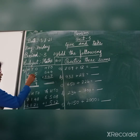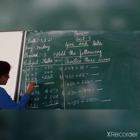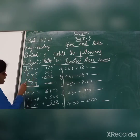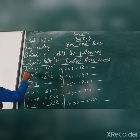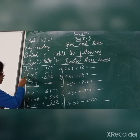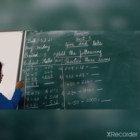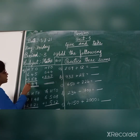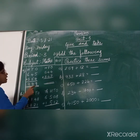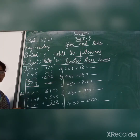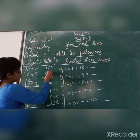Then the tens place we have to keep. 4 plus 5 is again 9. Then the ones place: what is the number from here? 6 and 3 — 6 plus 3, what is the number? 9. So 999 is the correct answer.